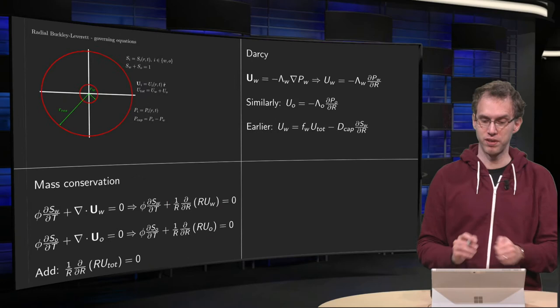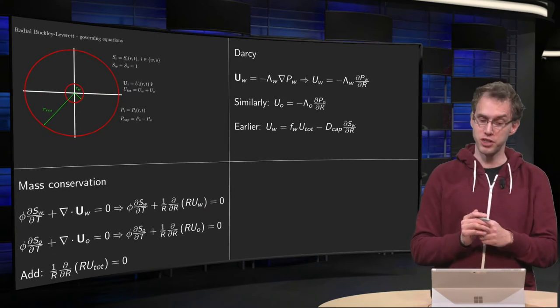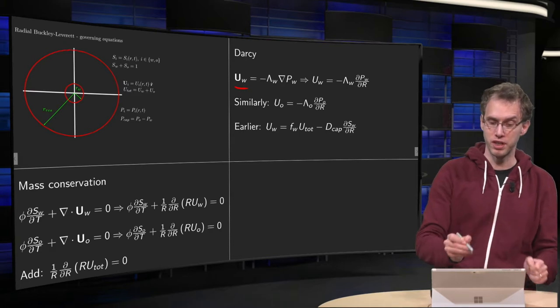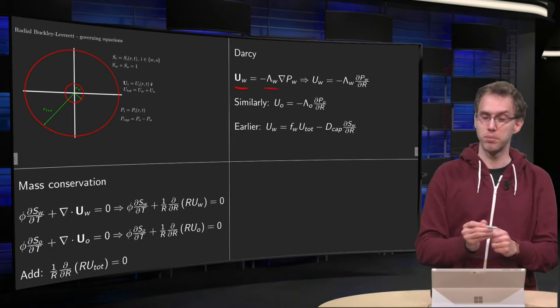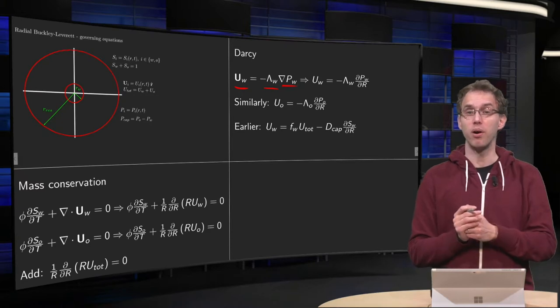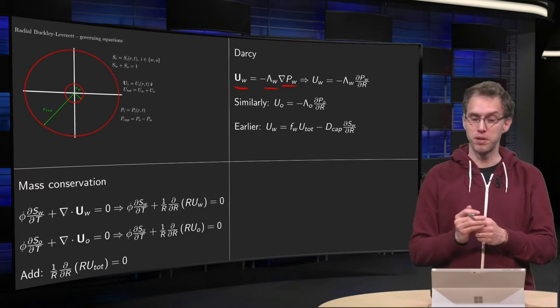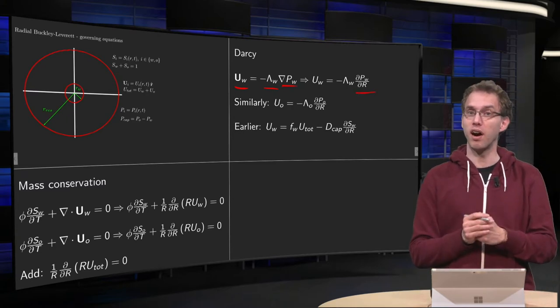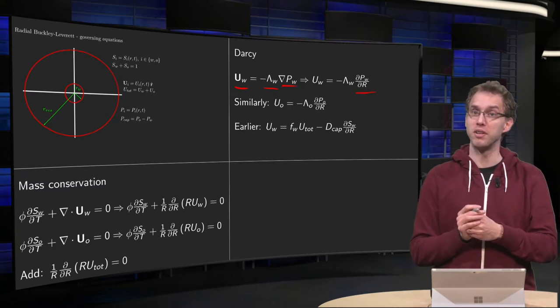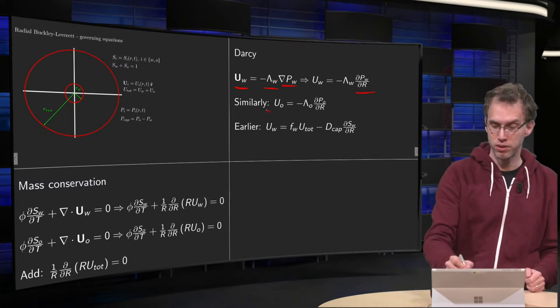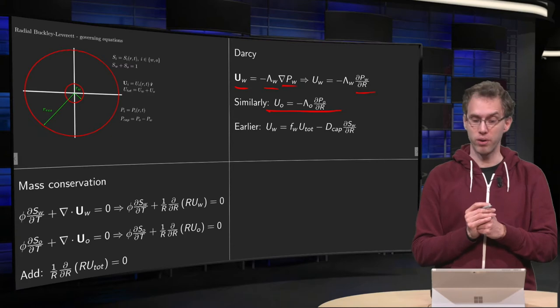So that's about the mass conservation. Moving on to Darcy, uw water velocity equals minus water mobility times the pressure gradient. We have flow only in the r-direction, so p depends on r, so the gradient of pressure reduces to dp/dr, still partial derivatives, because the pressure may depend on time. Similarly for the equation for oil.